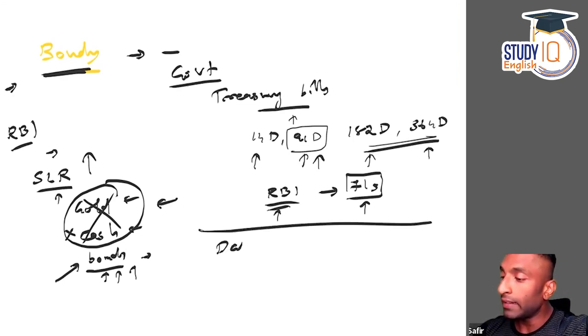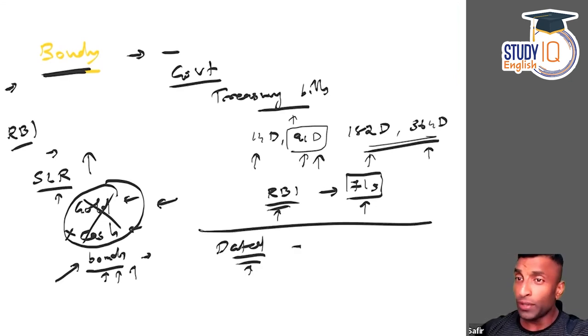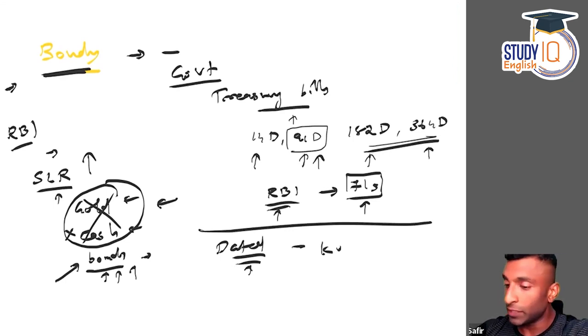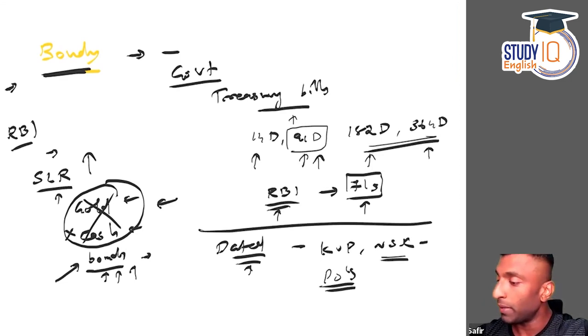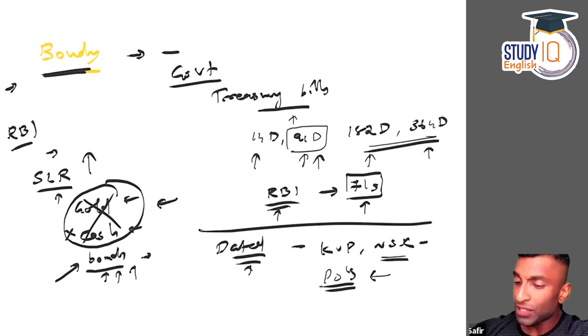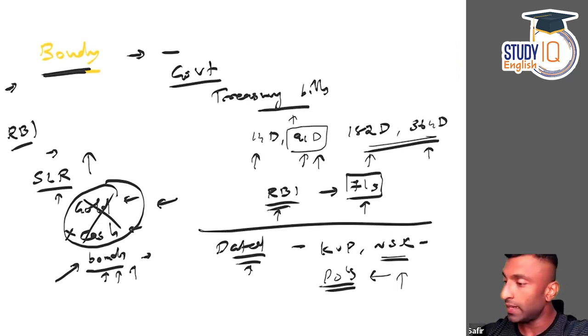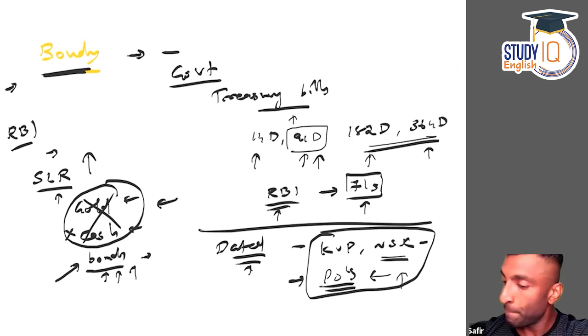Dated securities are medium-term and long-term government bonds. Examples include Kisan Vikas Patra and National Savings Certificates, which are issued through post offices and available to the general public. Other dated securities are issued to banks. So short-term is treasury bills, long-term is dated securities.